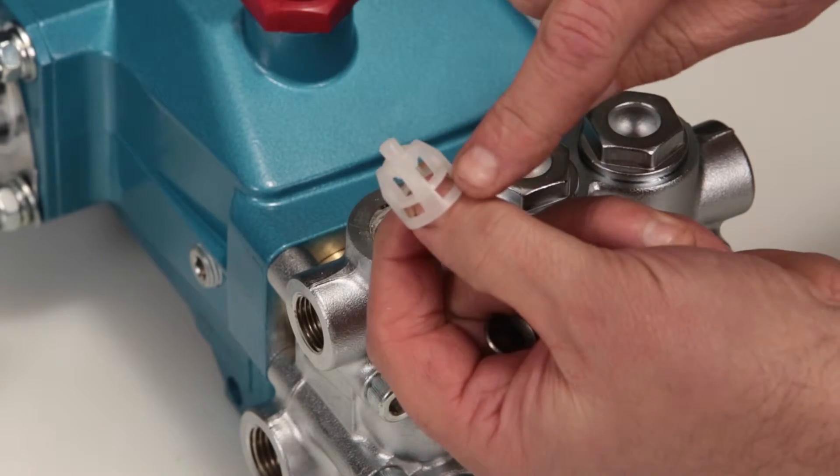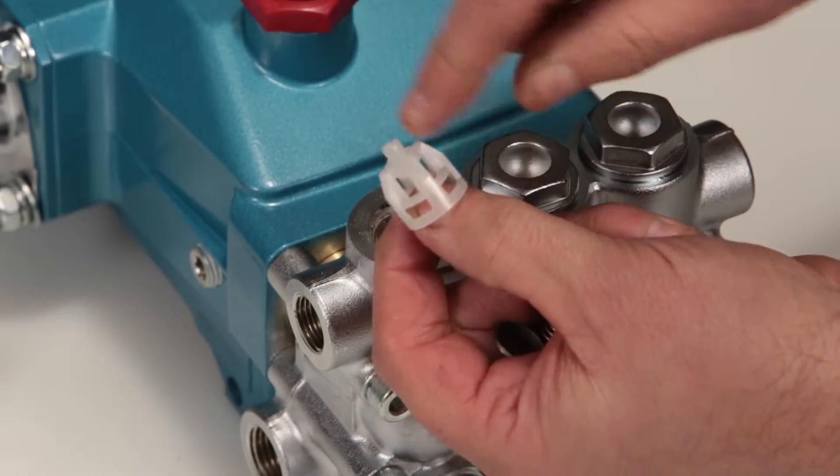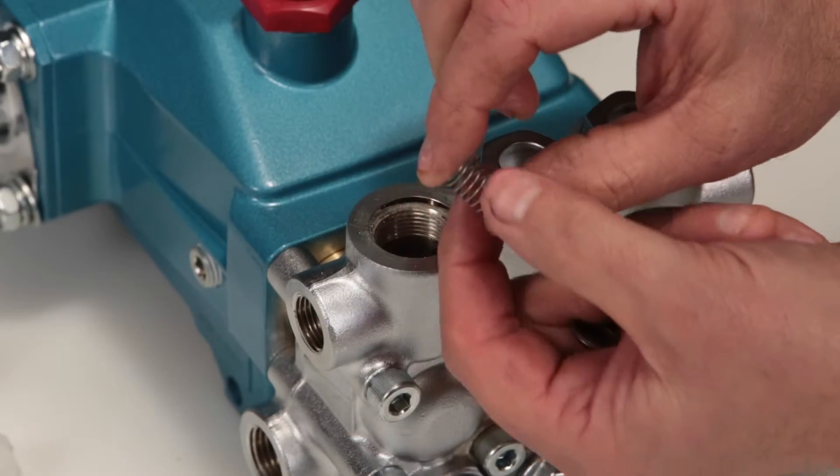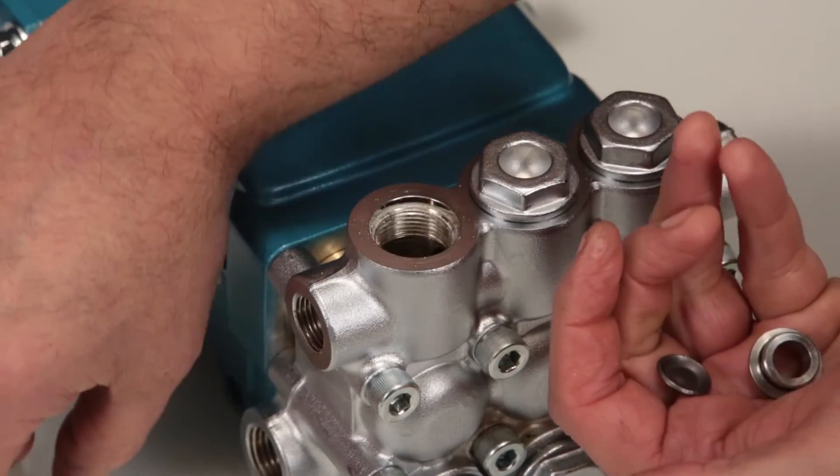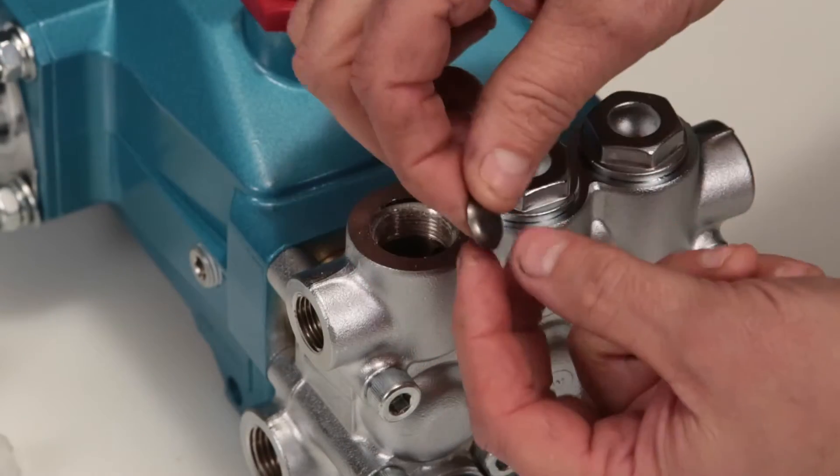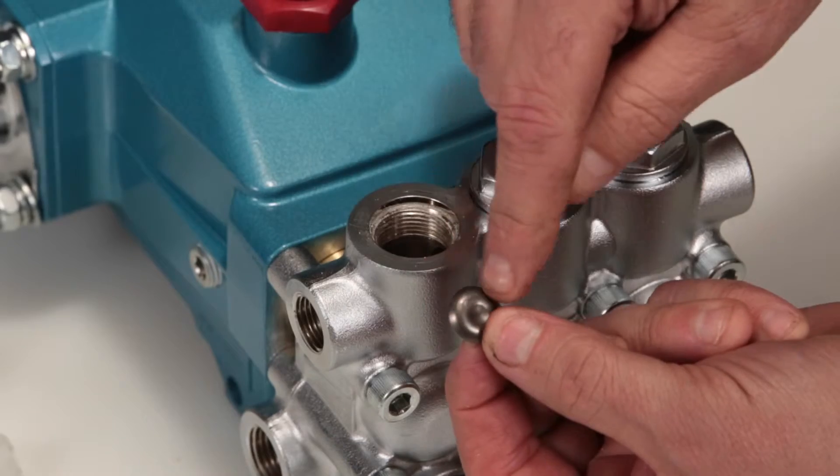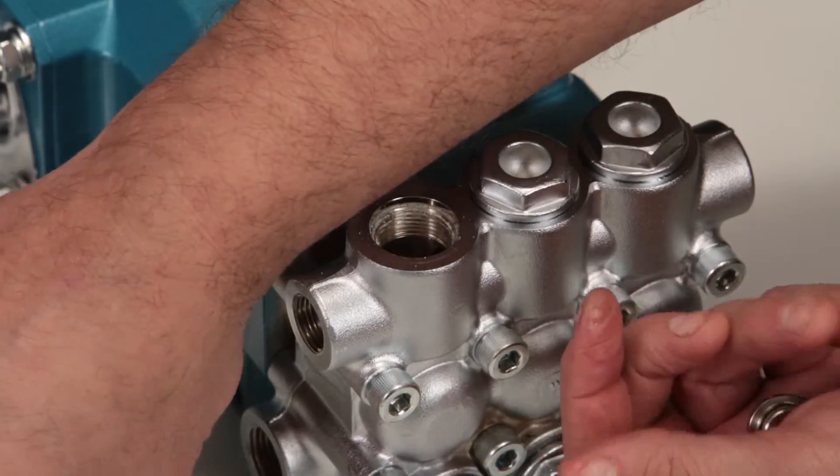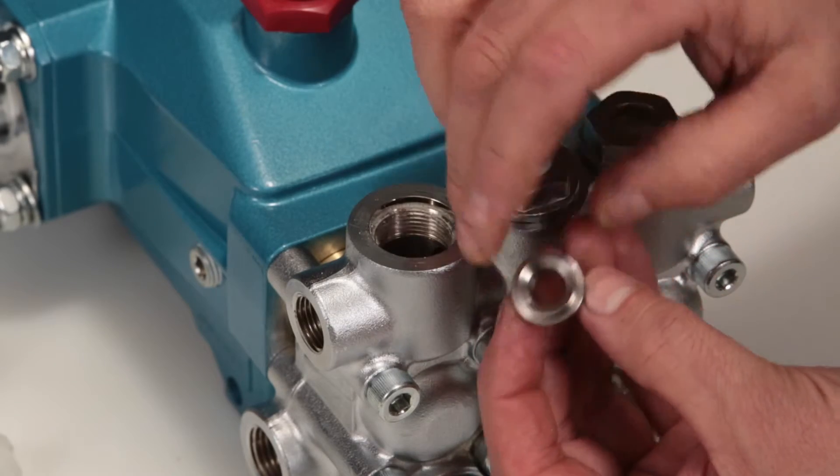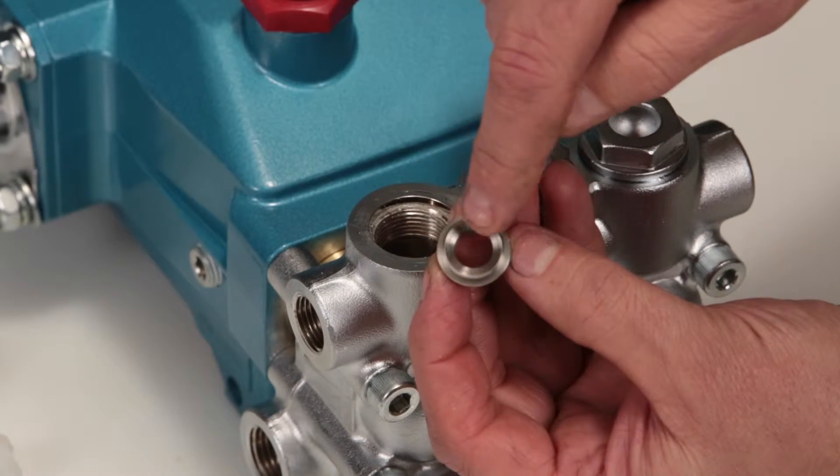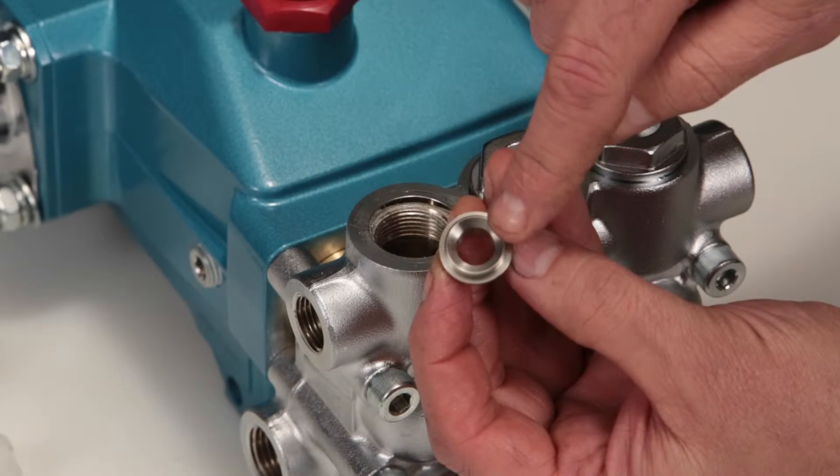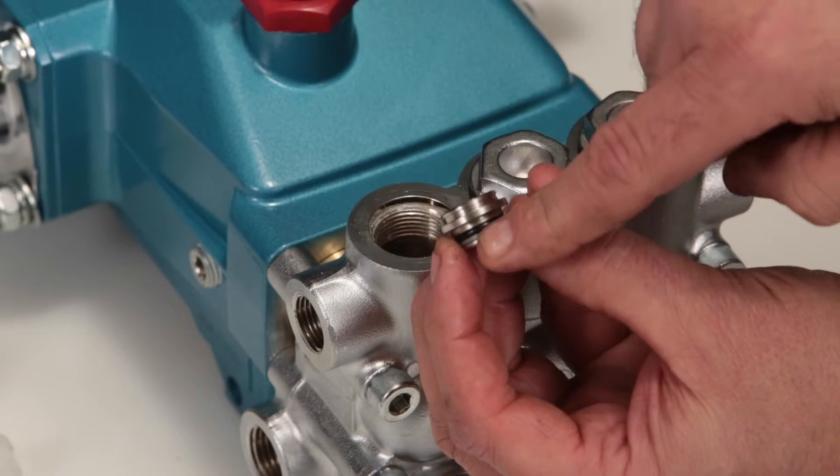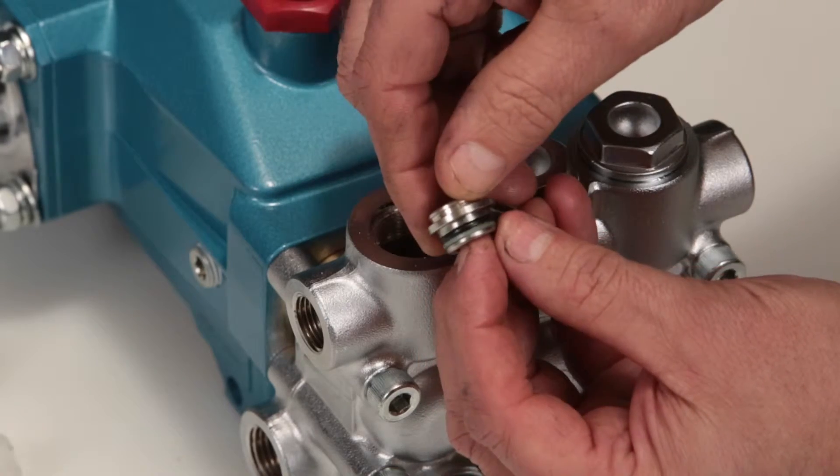Inspect spring retainer for cracks, excessive wear, or damage. Inspect spring for proper tension or any damage. Inspect tapered surface of the valve for wear, pitting, or damage. Inspect tapered surface of valve seat for wear, pitting, or damage. Pitting on the valve seat or valve is an indication of cavitation. Inspect valve seat O-rings and backup rings for cuts or nicks.